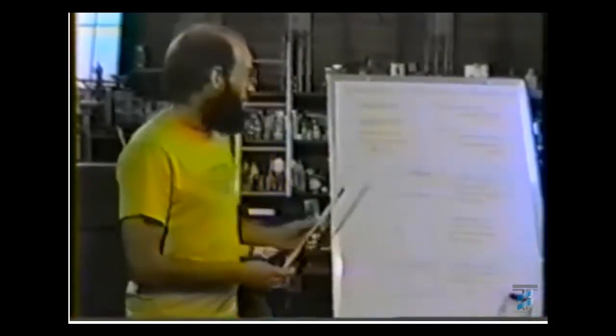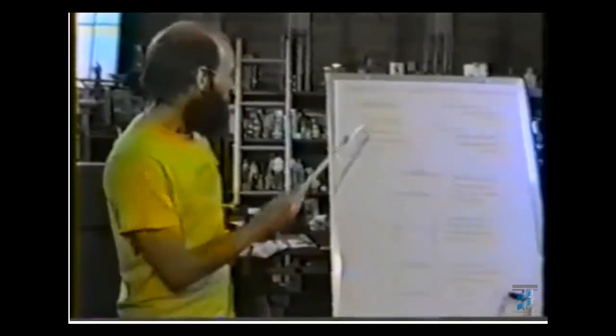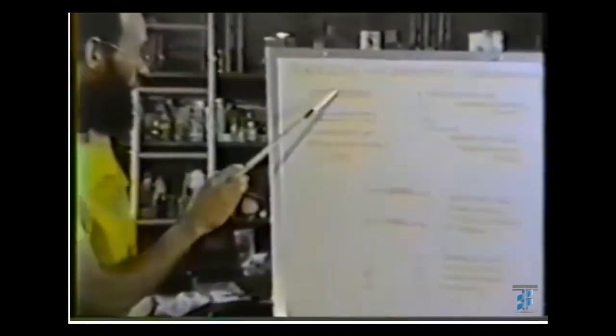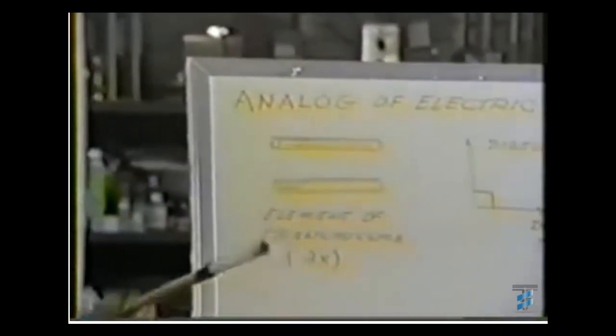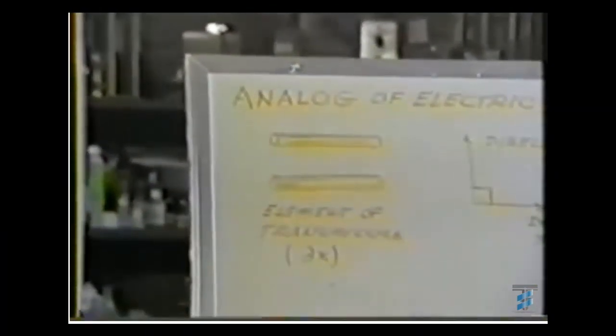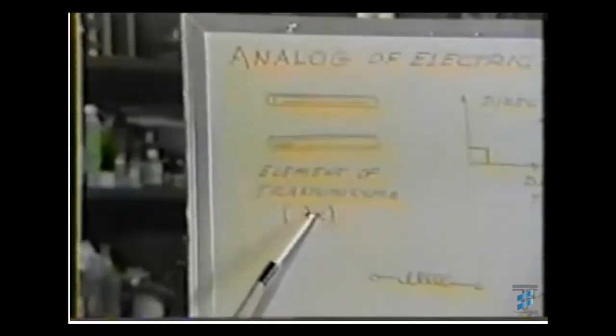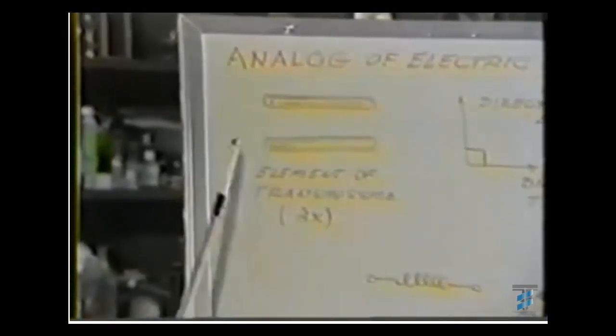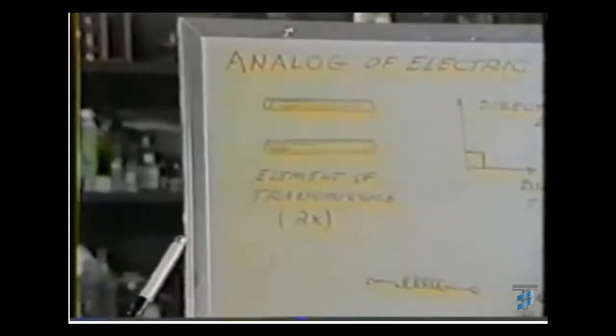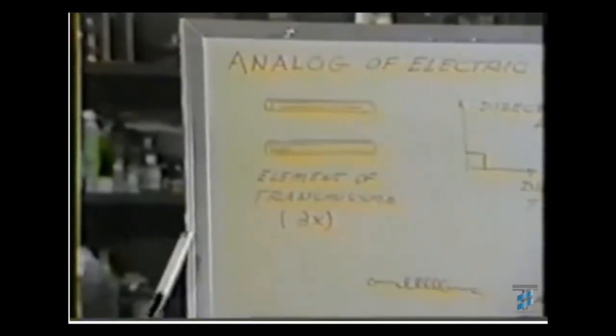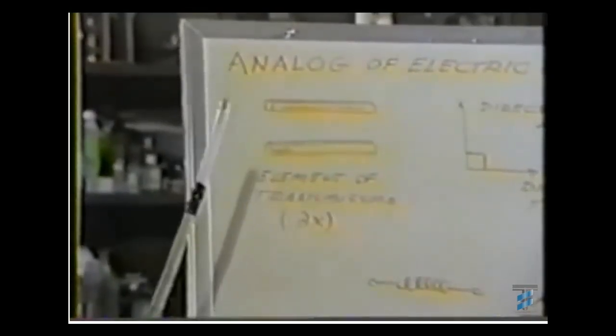In our analog study of electric waves we'll start with an element of what we've been working with, which should be one pair of wires. We'll call this the element of transmission, a differential element, as indicated by this symbol here, of an elemental length which should be one centimeter, one inch, one foot, or one light year depending on what you want to take as unit length.